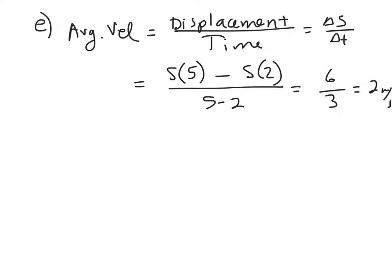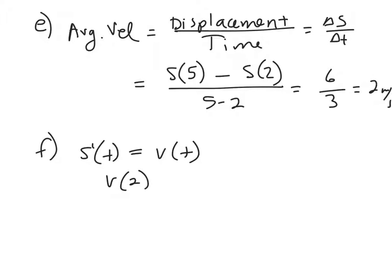Part f: instantaneous velocity is the derivative of the position function, which gives the velocity function. Then find velocity at two and velocity at five by substituting t equals two and t equals five into the velocity function.